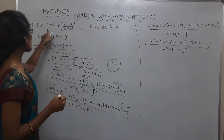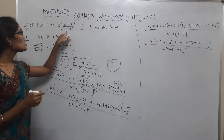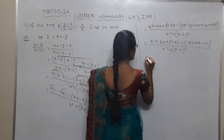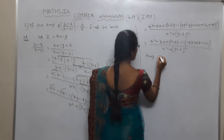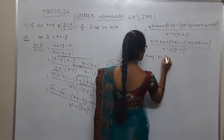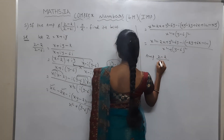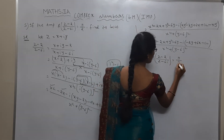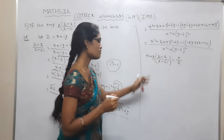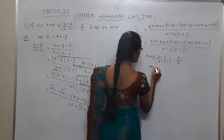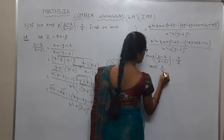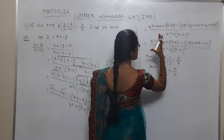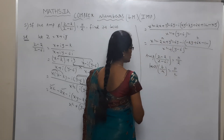Now see the question: what is given? Amplitude of Z minus 2 by Z minus 6i is equal to pi by 2. So using the formula: amplitude equals tan inverse of b by a, that equals pi by 2. Here the real part is a and the imaginary part is b.